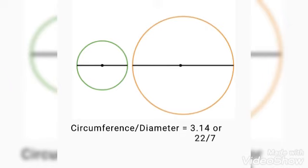And that will be approximately equal to 22 divided by 7. It means on dividing circumference by diameter in both circles, we get approximately the same value that is equal to 3.14 or 22 by 7.